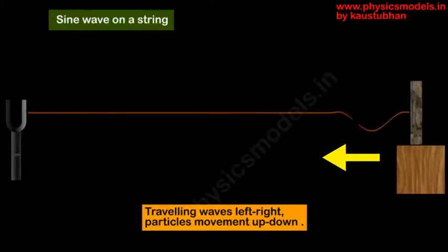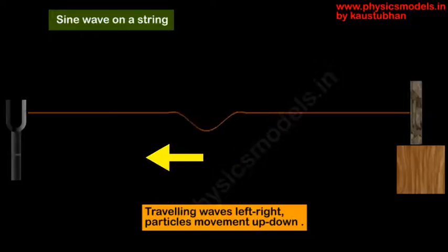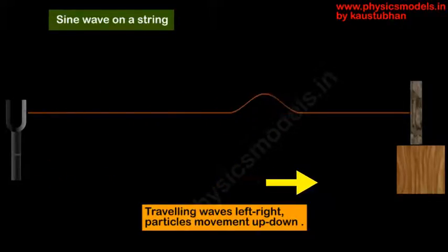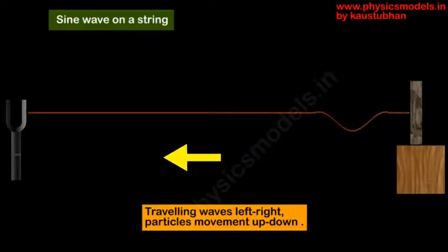The animation shows how the sine wave moves from left to right, and it bounces from the wall. When it bounces, the wave shape gets inverted. That's the important thing to remember.